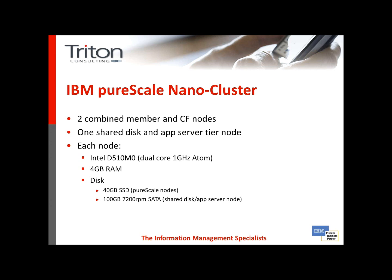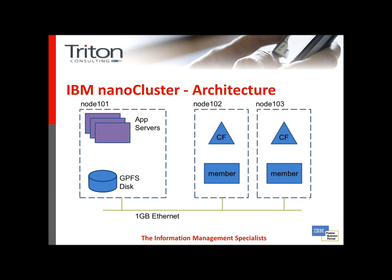Each node has four gigabytes of RAM. On the member and CF nodes, a single 40 gigabyte solid state drive, and on the shared disk and application server tier, a 100 gigabyte, 7200 RPM SATA drive. The architecture is important in that one of the limitations of this platform is there's no InfiniBand interconnect between the CFs and the members, which is a bit of a restriction in terms of the performance of the overall solution.